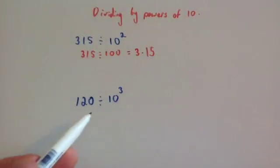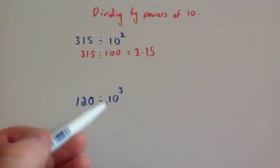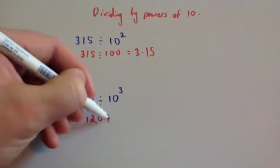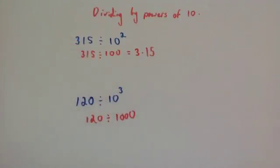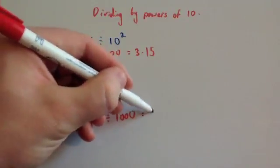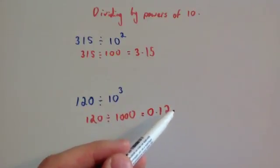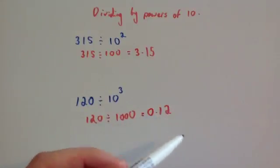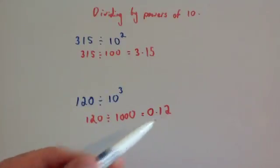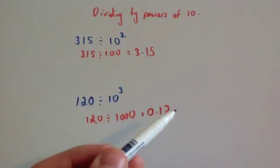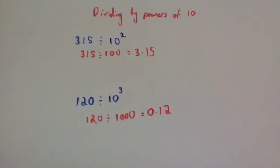And finally, 120 divided by 10 cubed. Well, 10 cubed is 1,000, so you're going to get 120 divided by 1,000. So that means you're going to move the decimal place 3 places to the left. So at the end of the number here, we're going to move it 3 places, so 1, 2, 3. So it's going to go to the front of the number. So the answer would be 0.12. You could, if you want to, include the zero at the end of the number, but remember, a zero at the end of a decimal number, there's no point in writing it, so you could just write 0.12.